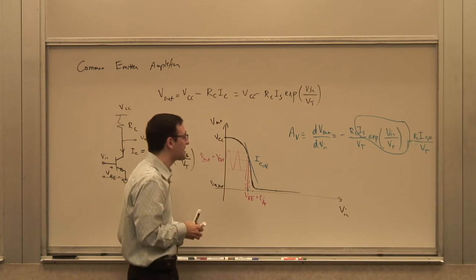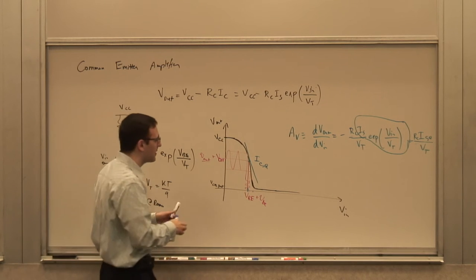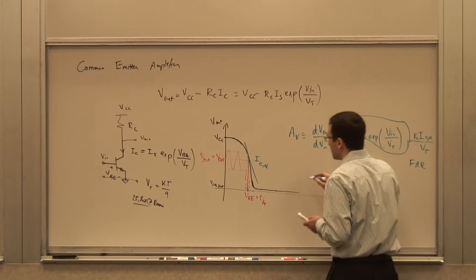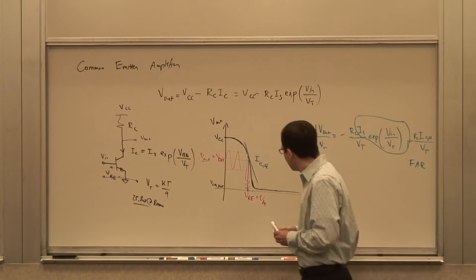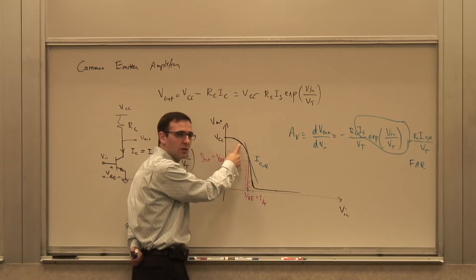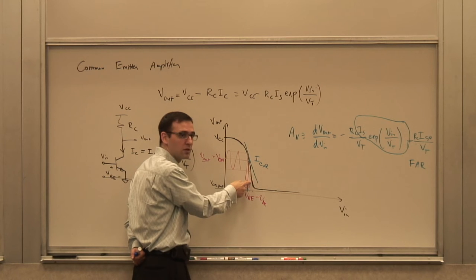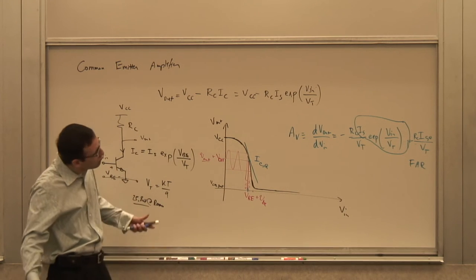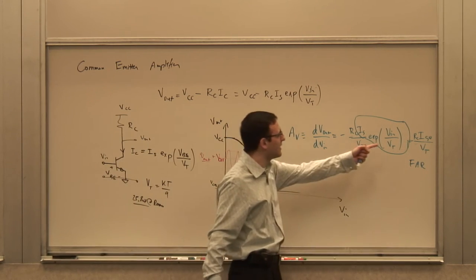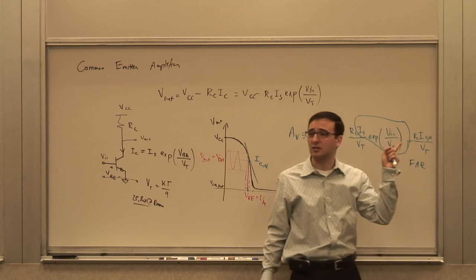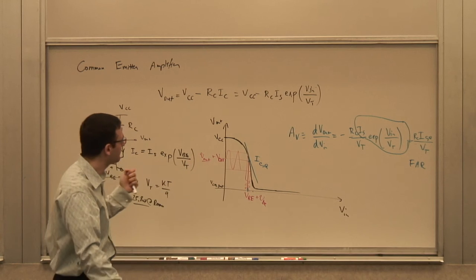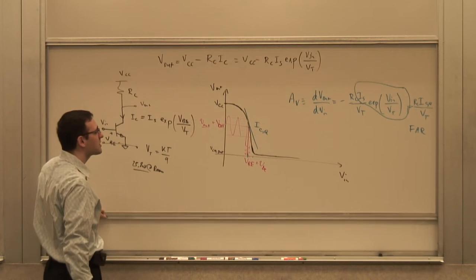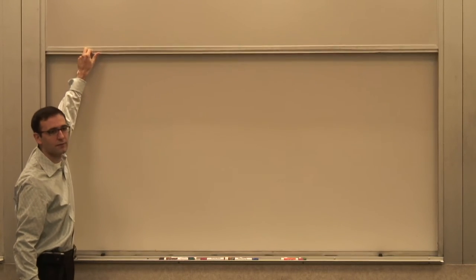This tells us: if I want more gain, I need to operate at higher collector currents, as long as I'm in the forward-active region. It also tells me a larger RC gives more gain. Let's now see if we can arrive at the same result using the small-signal model.